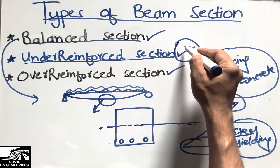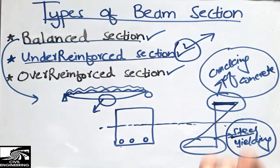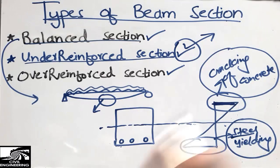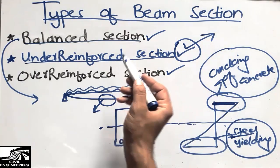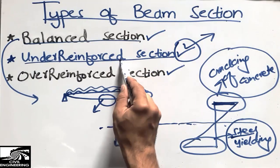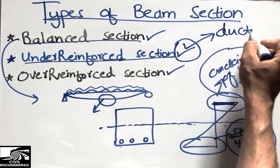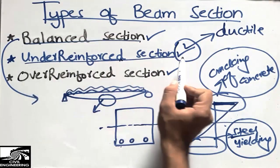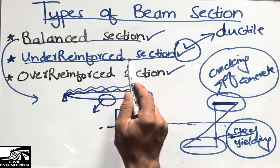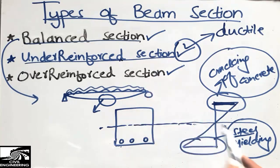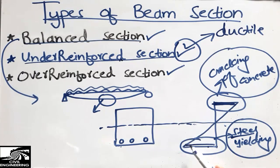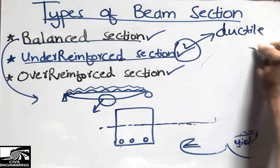We always prefer the under-reinforced section because it gives more time for people to evacuate the building before failure. The under-reinforced section is a ductile section — it is the most ductile among the three types. The steel will yield first, giving us a warning that the structure is failing, so people under the structure can run away and be saved.